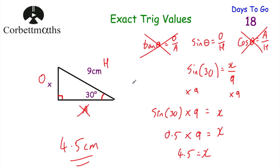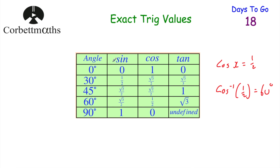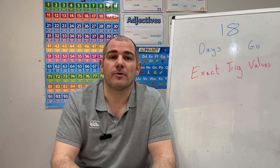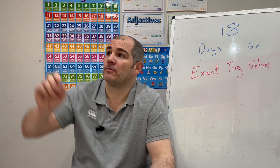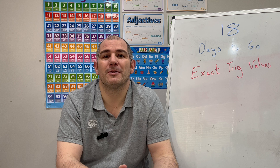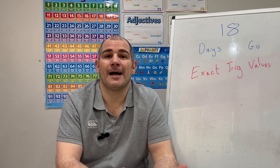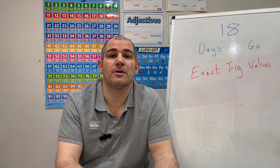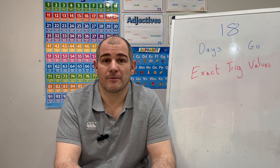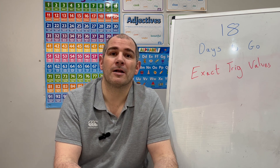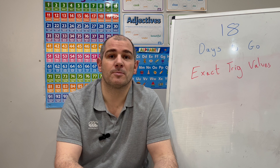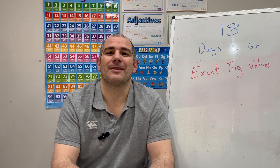We were able to do that trigonometry question without a calculator because we knew our exact trig values. Here are the exact trig values that are really useful to know — feel free to press pause and write these with window pens on your windows, or jot them on your cheat sheet. In this video we've gone through exact trig values. If you're daydreaming, look out the window and see them. Get friends and family to quiz you on them. Our next topic will be tomorrow at 3 o'clock on YouTube. Please like and subscribe — I hope you found this video useful. See you tomorrow!